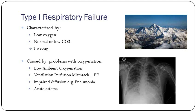One thing people forget when learning about ABGs: we want to know how well oxygenated the patient is. Type 1 and type 2 respiratory failure. Type 1 is low oxygen only — the way I remember it is type 1, one thing's wrong: low oxygen, CO2 is normal or a bit low, usually caused by problems with oxygenation. If you see bilateral pulmonary infiltrates on an ITU patient who is ventilated — that's ARDS.